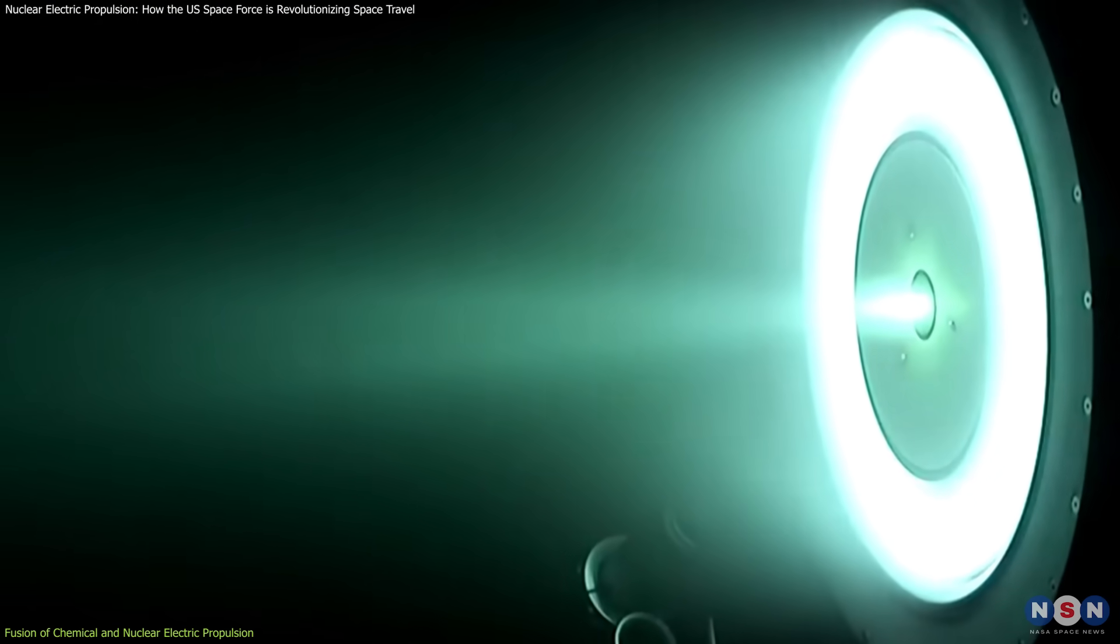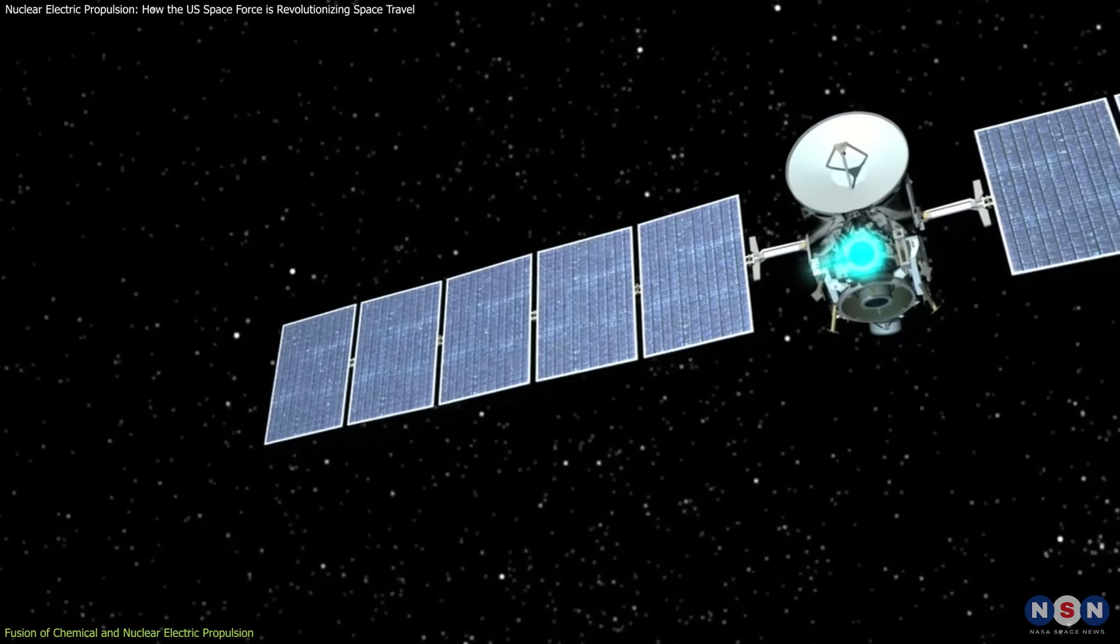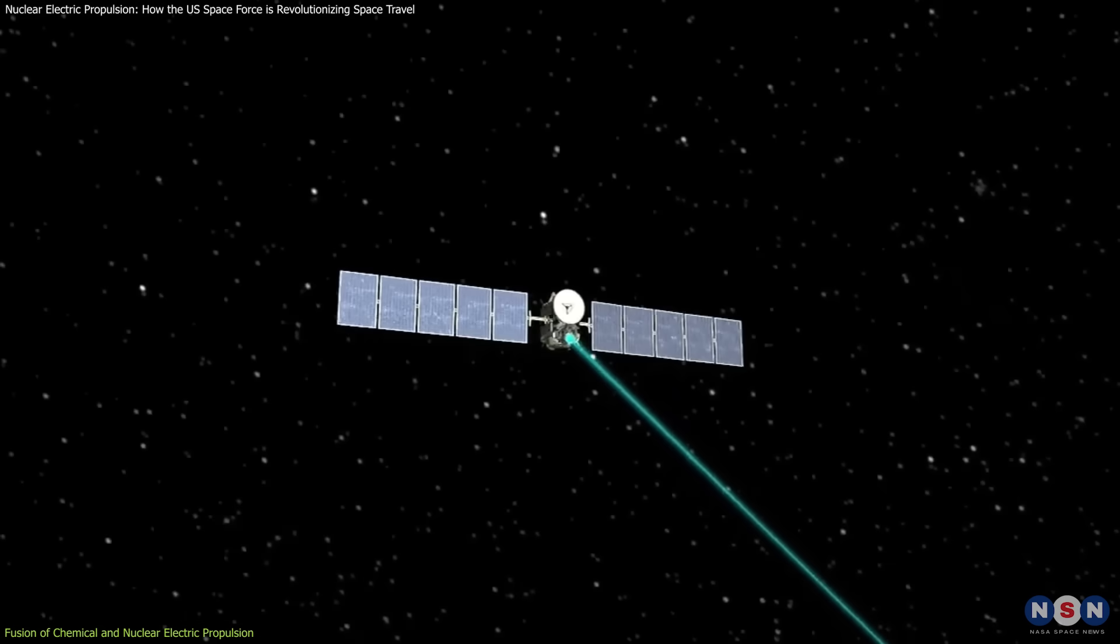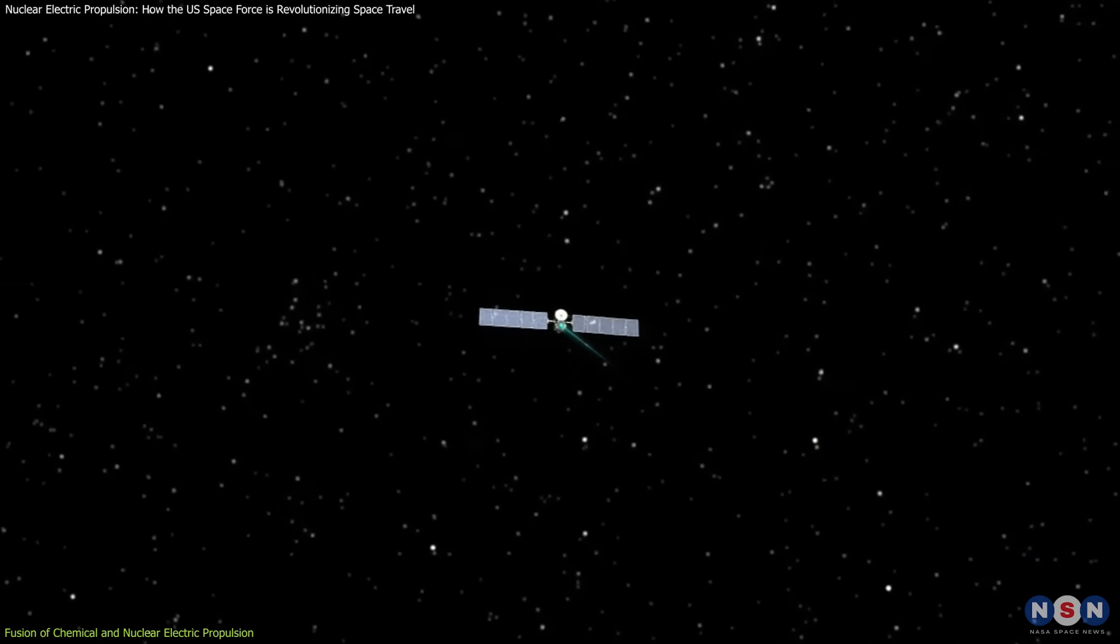For example, the Hall Effect thruster, which has been used on missions like the Dawn spacecraft, provides steady and efficient thrust, making it suitable for extended deep space missions.